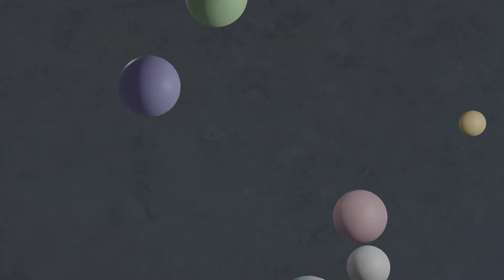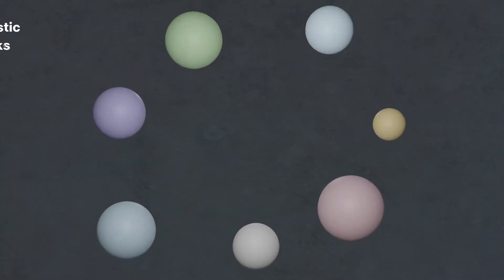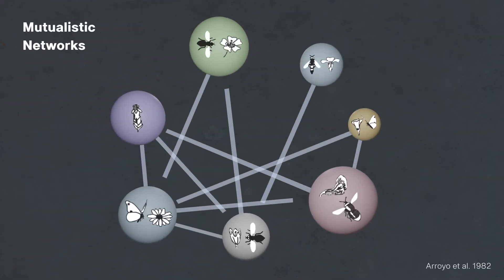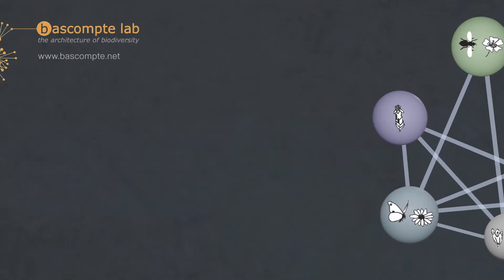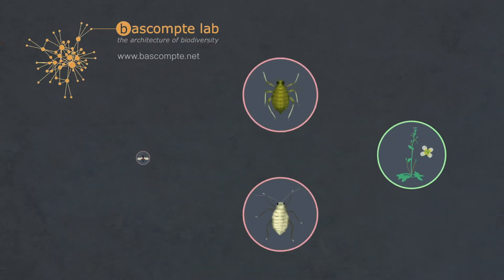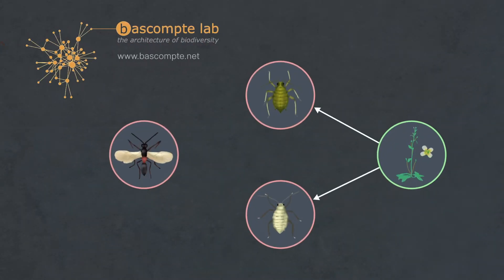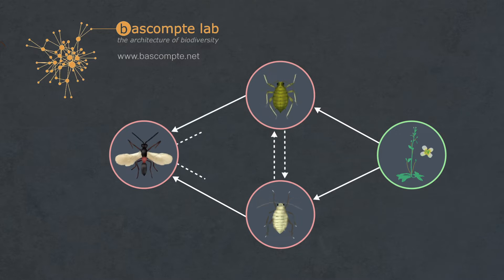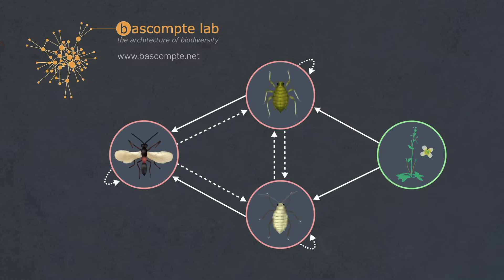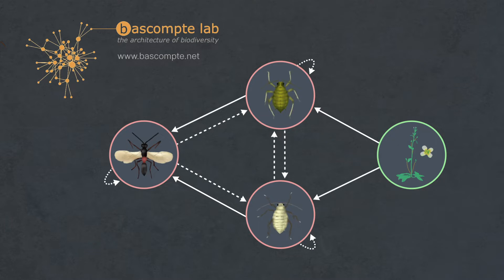Species interact with each other, creating complex networks of mutual dependencies. Work at the Bisconti lab explores to what degree the structure of those networks affects species persistence — what can be understood as the architecture of biodiversity.